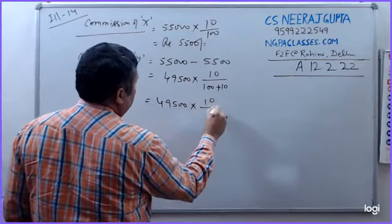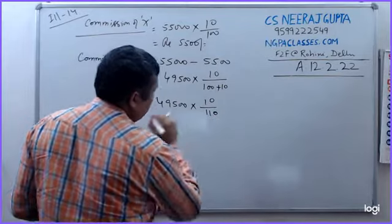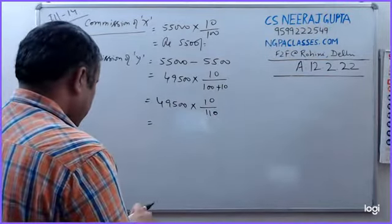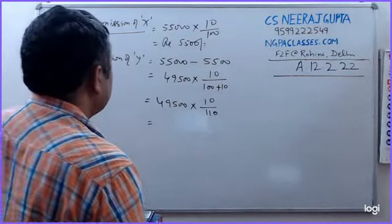Into 10 by 110. I will take the calculator. 49,500 into 10 by 110, that is 4,500.